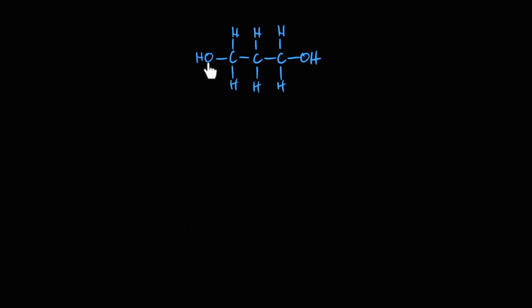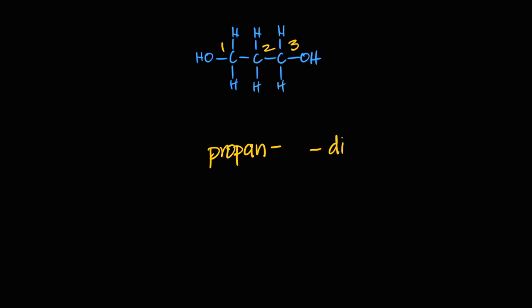Here I've got two alcohol groups — a diol. The OH groups are on carbon one and carbon three from either direction. It's a three-carbon chain — 'prop' — all single bonds — '-an' — two alcohols — '-diol' — on positions one and three. The name is propane-1,3-diol.